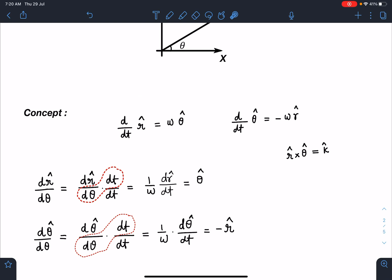For the first derivative, r cap cross theta cap is simply k cap. For dr cap/dθ, I can multiply by dt in numerator and denominator. This becomes ω times (1/ω)(dr cap/dt), which becomes ω theta cap divided by ω. The omegas cancel, and we get theta cap.